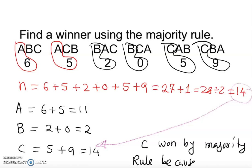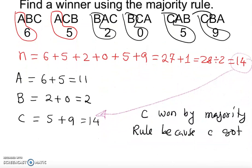Cynthia wins because she got 14 or more votes, and 14 votes is the majority threshold — that's 50%. So C is clearly the winner with 14 votes, which represents exactly 50% of the 27 total votes rounded up.